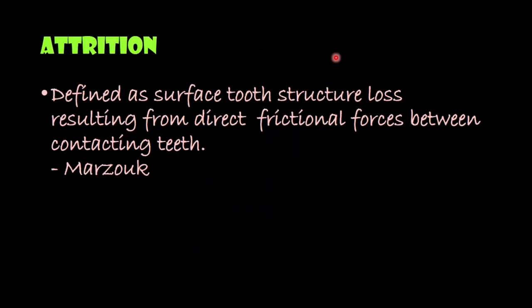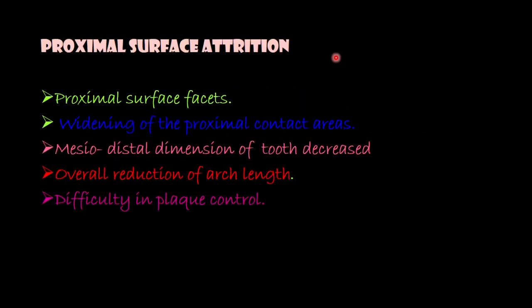Coming on to attrition: attrition is defined as the surface tooth structure loss resulting from direct frictional forces between the contacting teeth. In proximal surface attrition, we can see the presence of facets in the proximal surface, so there will be widening of the proximal contact area. The mesiodistal dimension of the tooth is decreased, leading to drifting of the teeth in mesial direction and a decrease in overall arch length. Since the physiology of the interdental papilla is lost, there will be difficulty in plaque control.